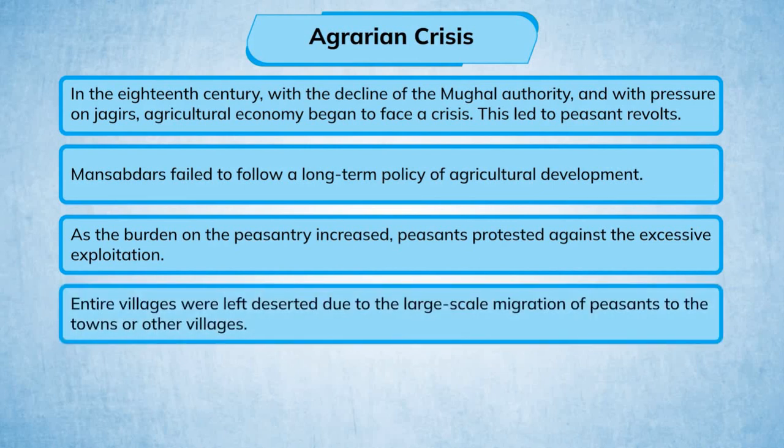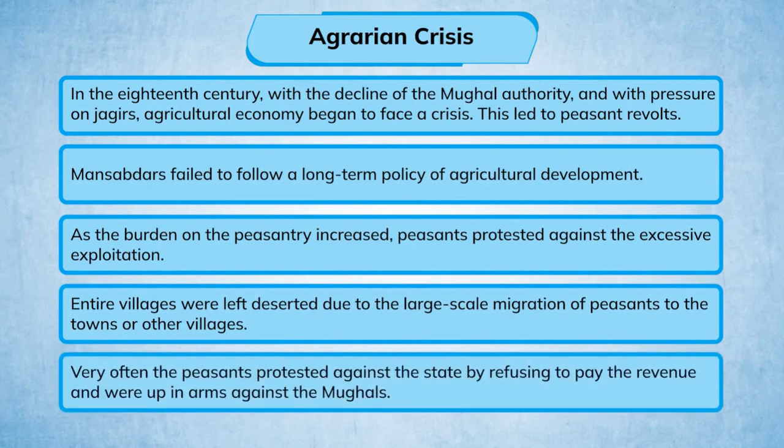Entire villages were left deserted due to the large-scale migration of peasants to towns or other villages. Very often the peasants protested against the state by refusing to pay revenue and were up in arms against the Mughals.